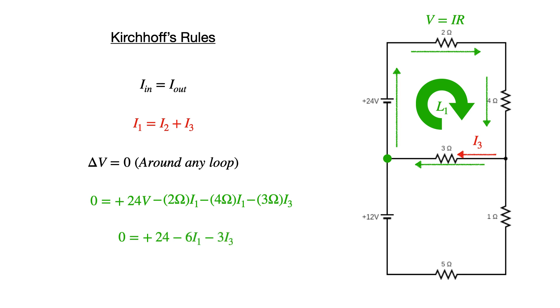If I collect my terms, bring the voltage on one side and the currents on the other, I will have a statement for loop one as 24 volts is equivalent to some function of current one plus current three, which are the currents flowing in that loop.